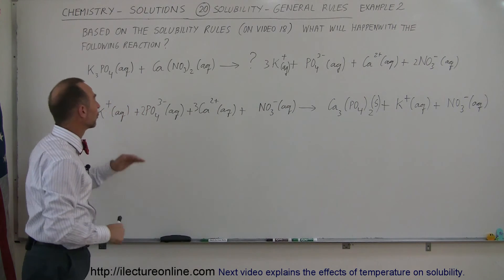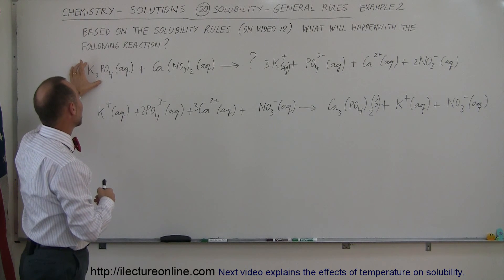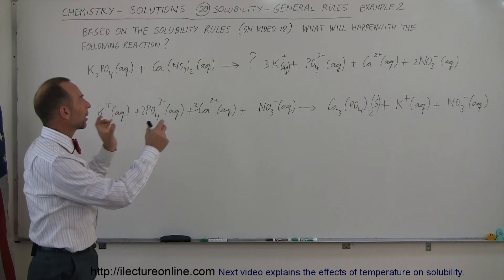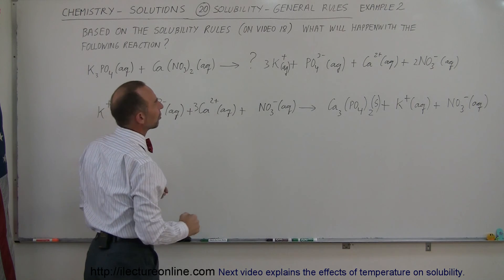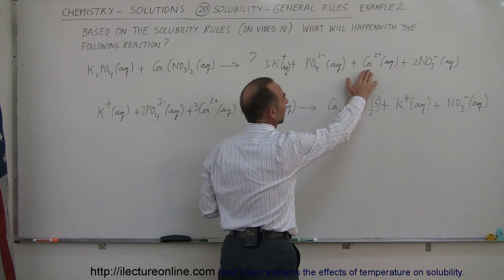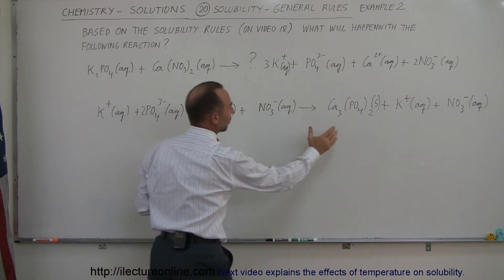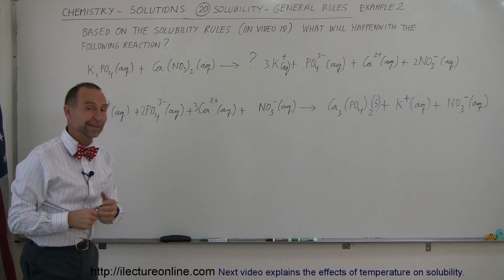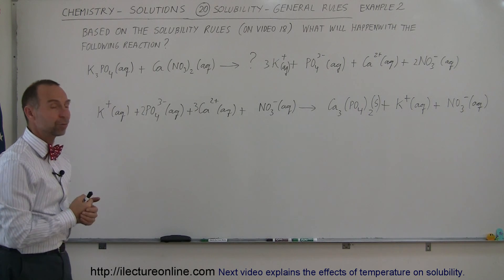So again, first of all, we know that potassium phosphate is soluble because of the alkali metal — potassium mixed with phosphate — otherwise it would not be, so they'll break apart. Calcium nitrate will break apart into its ions because any nitrate compound typically tends to be soluble. But then phosphate combined with calcium — we know that's not going to be soluble, because calcium is an alkaline earth metal — so they'll go ahead and become a precipitate. The potassium and the nitrate ion will remain in solution, and based upon the rules, we know that this is what's going to happen with this reaction.